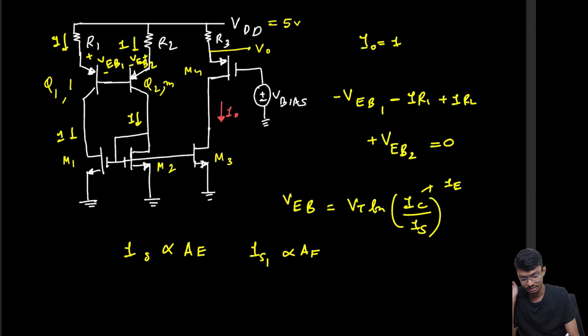And Is2 is m times A1, which is given. So Is1 upon Is2 equals 1 by m.